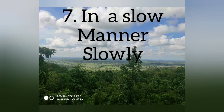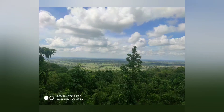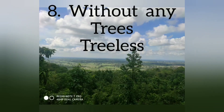Without any care is called Careless — a person who is very careless in their behavior. The seventh one is in a slow manner, called Slowly — a person who talks slowly, who runs slowly, who writes slowly. The last and eighth one is without any trees, that is called Treeless — a treeless forest.